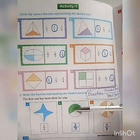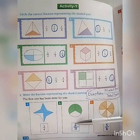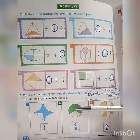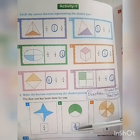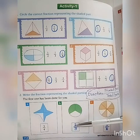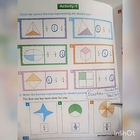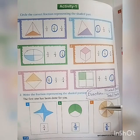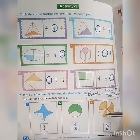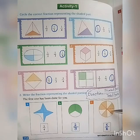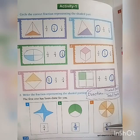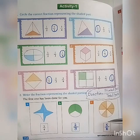Here only two parts are shaded, so first we write down two. How many total parts are there? One, two, and three - total parts are three, so the fraction will be two upon three. In the next question, how many parts are shaded? One, two, three, four, five - five parts are shaded. Total parts are one, two, three, four, five, six, seven, eight - so we write the fraction as five upon eight.